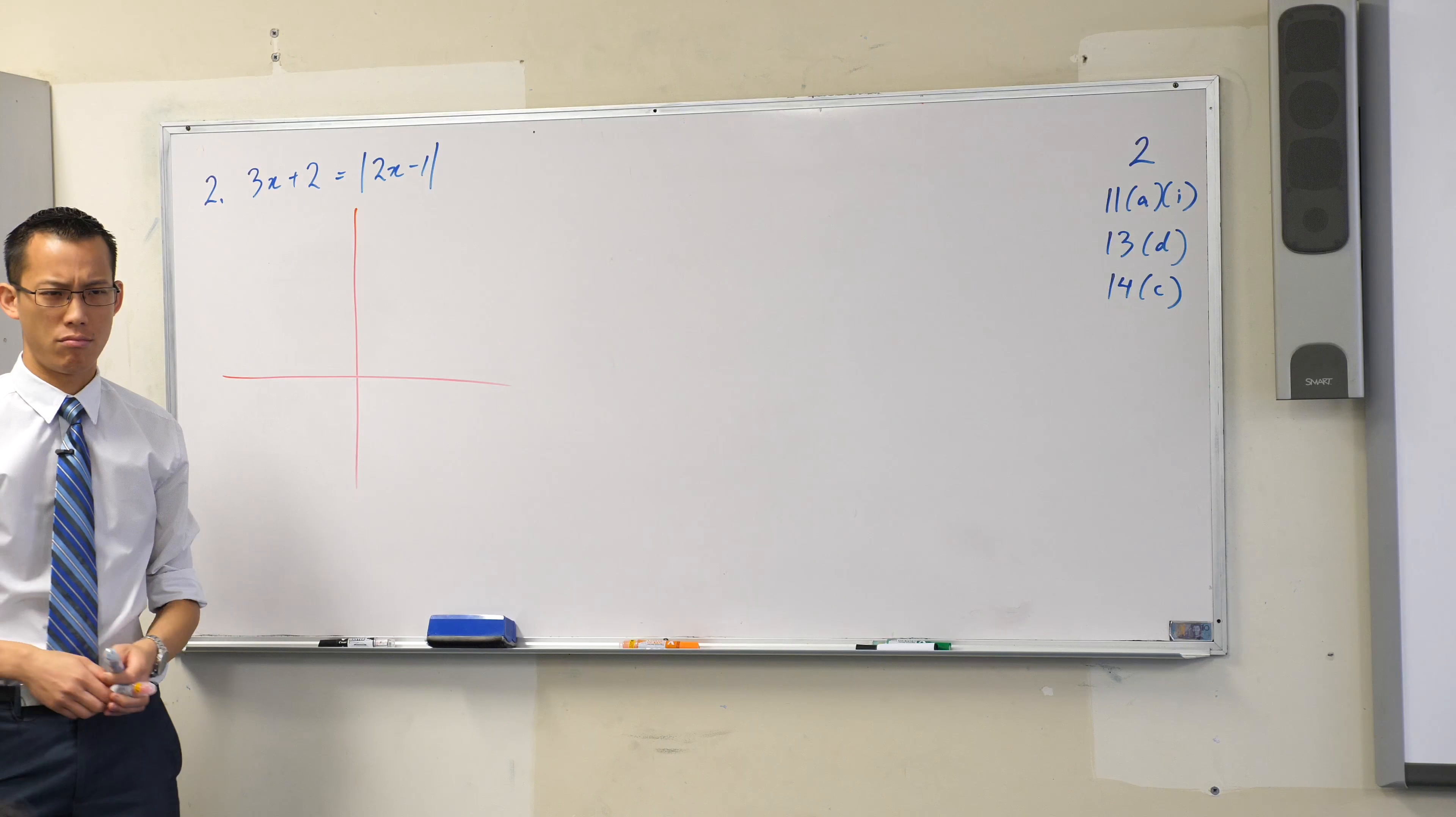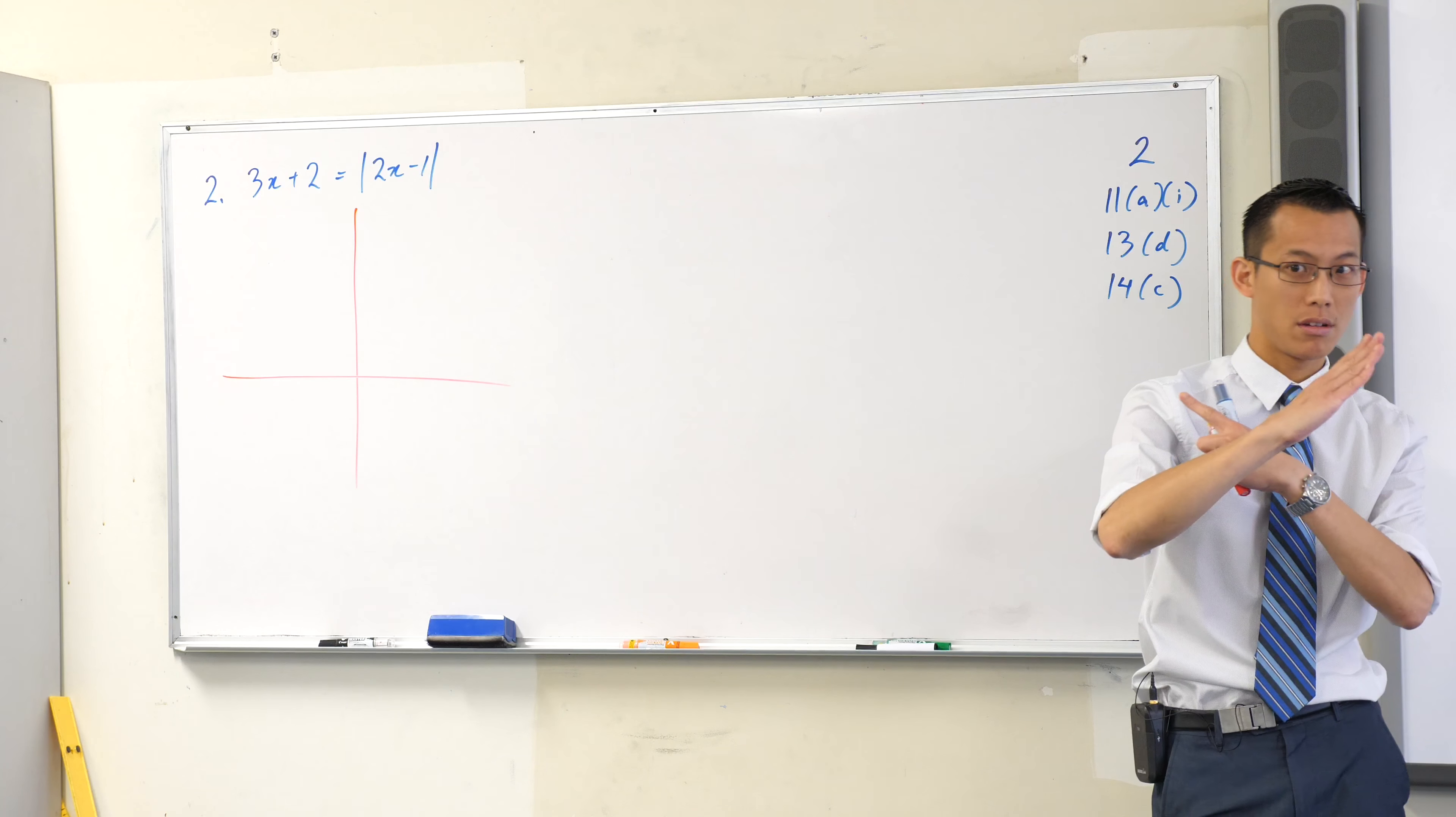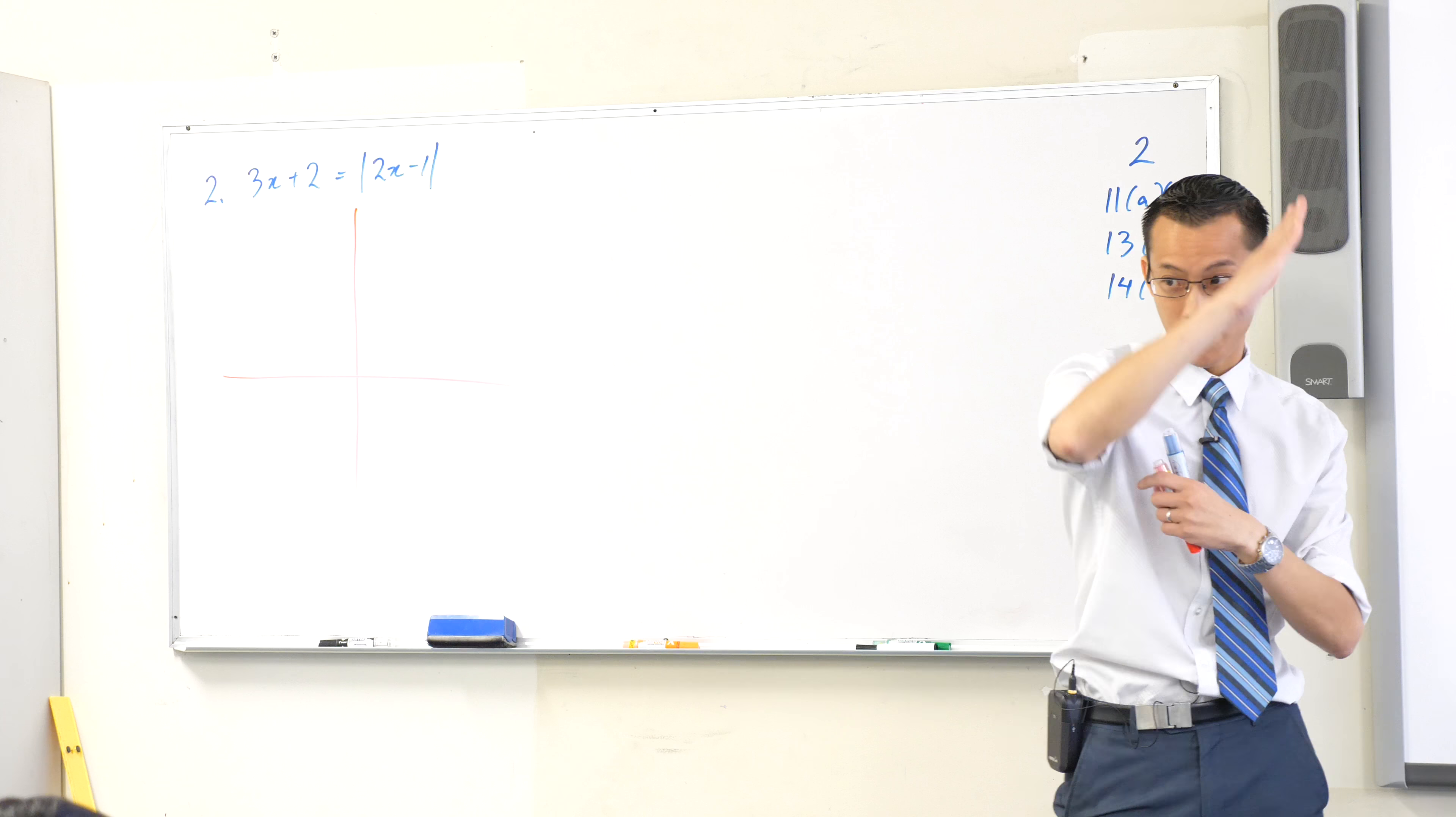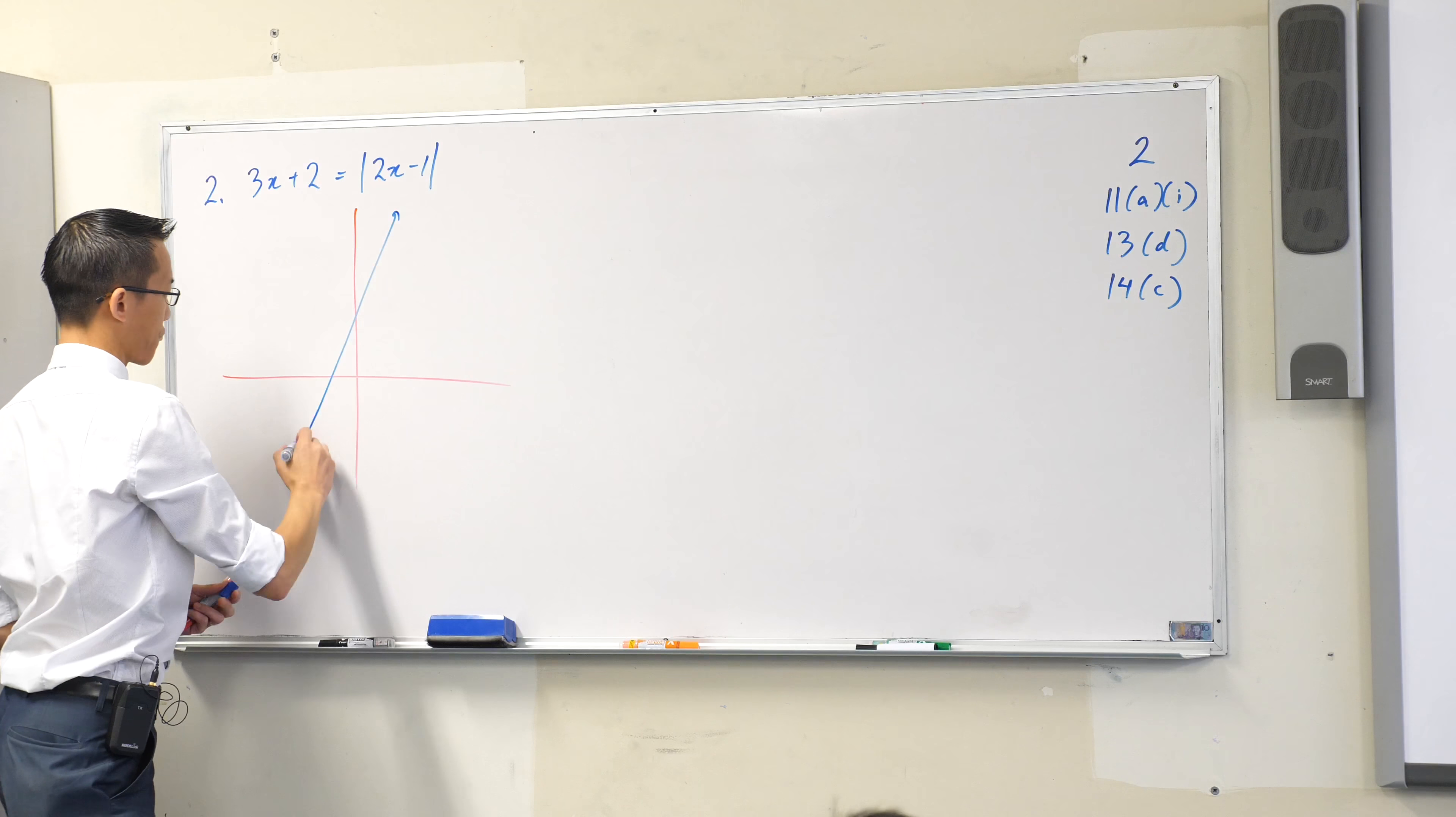3x plus 2, so we know it's gonna be fairly steep. What does the 2 tell you? The 2 tells you the y-intercept, so it's been shifted vertically a little bit, so I'm just gonna do a rough drawing of that.